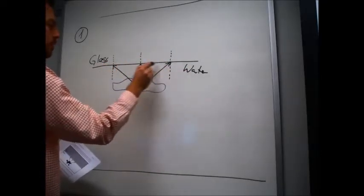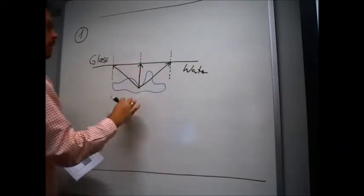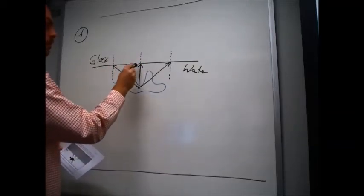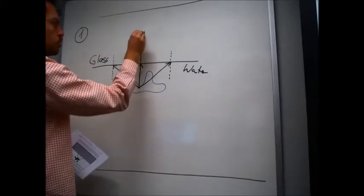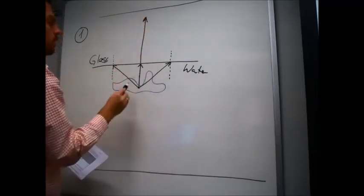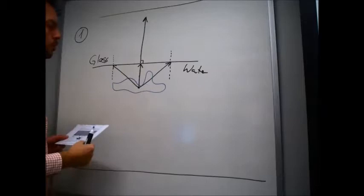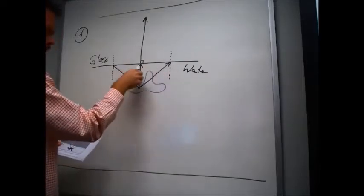These normals are always perpendicular to the interface between glass and water. So if I look at this ray, it comes straight on along here. It will travel straight on, perpendicular to the surface, along the normal.